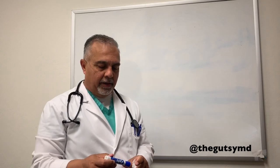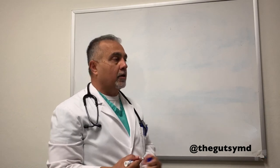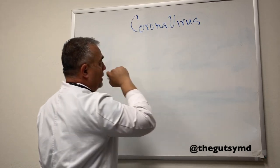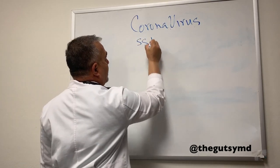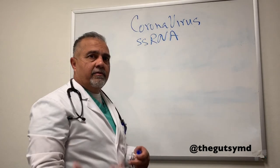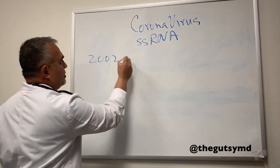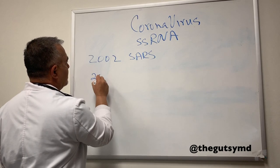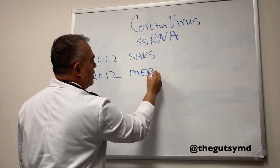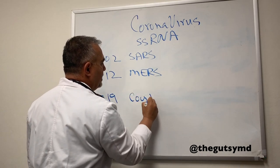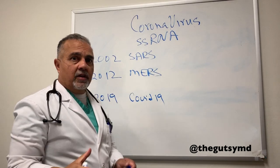I'm literally in between patients — we had a cancellation — so I'm going to take this opportunity to do my second video regarding the coronavirus family. We've already talked a little bit about their history. These are single-strand RNA viruses that love the lungs; that's where they do their damage. We talked historically about 2002 SARS, 2012 MERS, and then of course in 2019 we're living with COVID-19.